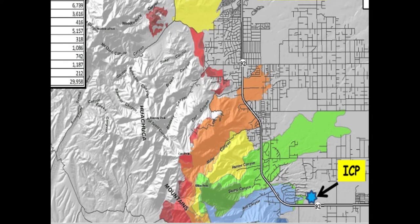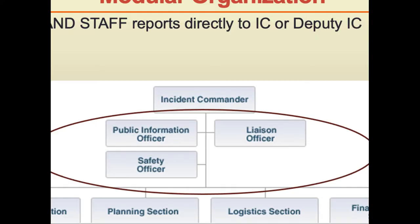This is a map from another hazardous materials incident. You can see that the command post is designated right here, so everybody knows where it is — and that was missing on the Bear Trap map. Your incident commander basically manages the entire incident; they are on the top. The command staff reports directly to the incident commander, or sometimes there could be a deputy incident commander if it's a very large incident.